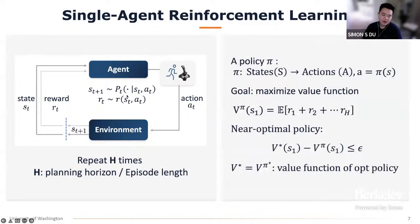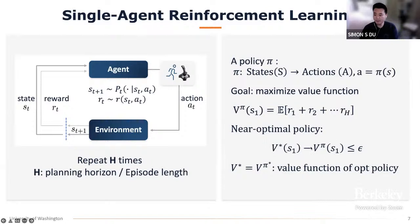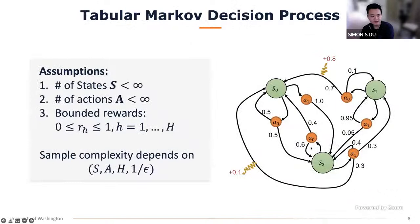The goal of single-agent learning is to learn a good policy — a mapping from state to action — that maximizes the total expected reward or value function, defined as the expectation over the policy and transition starting from a fixed state s_1. We want to learn a policy close to the optimal policy, measured by the difference in value. In the tabular setting with finite states, finite actions, and rewards in [0,1], the sample complexity depends polynomially on S, A, H, and 1/ε.